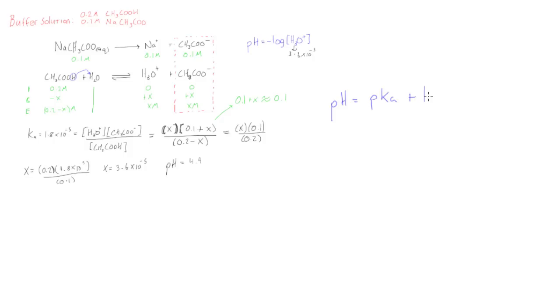So what that is is pH equals pKa plus the log of the concentration of our conjugate base divided by our weak acid. Those are the concentrations of those.